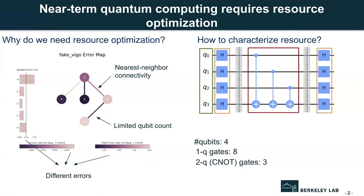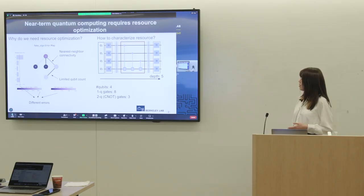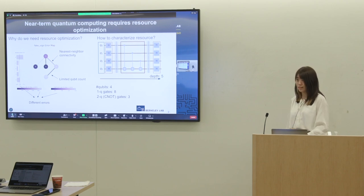And these dashed lines are just barriers to separate between the single qubit gate and two qubit gates. The circuit depth is defined as the critical path of the circuit, which is five here, since we have five gates at the bottom qubit Q3. So the number of qubits, one qubit gates and two qubit gates and circuit depth are the common metrics to characterize the resource of a quantum circuit.